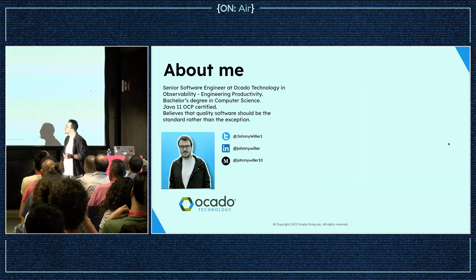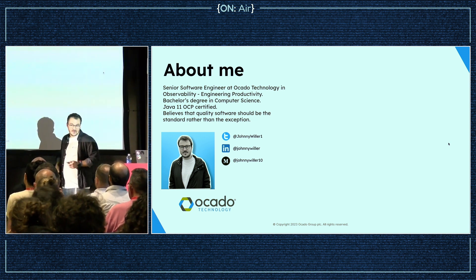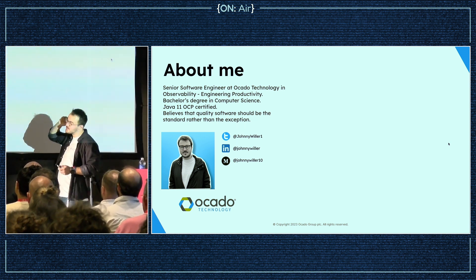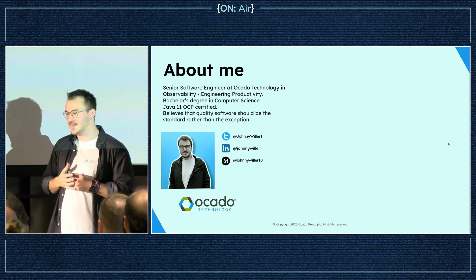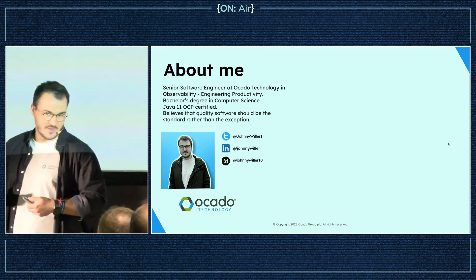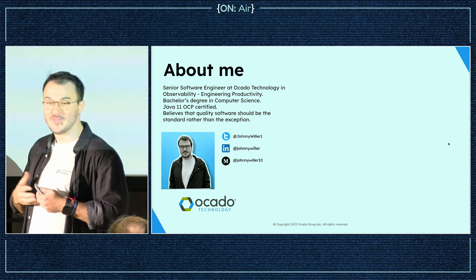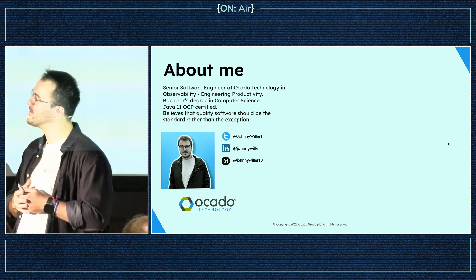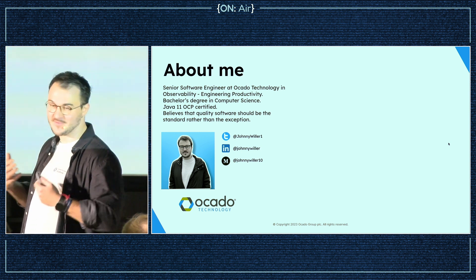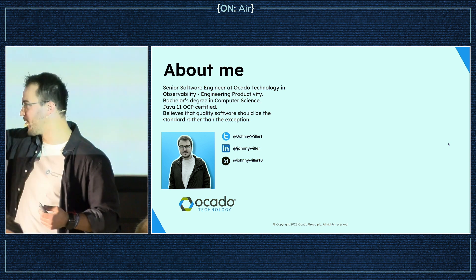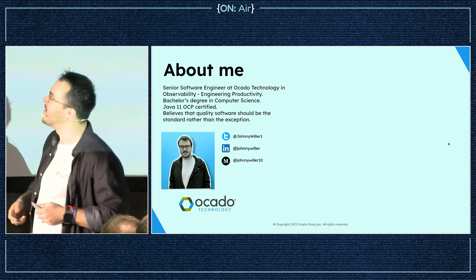My name is John Willard, I'm a software engineer at Ocado Technology, and I have a bachelor's degree. You can find me on these social networks. This is a lot of content, and the presentation is quite visual — very doodly, full of drawings — but I'm trying to put it in a more comprehensive long-form article. So if you follow me on Medium, you're going to get tuned to that and more.